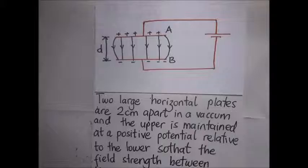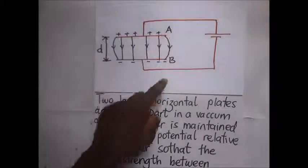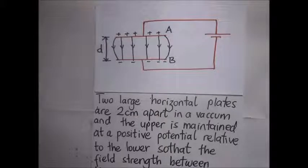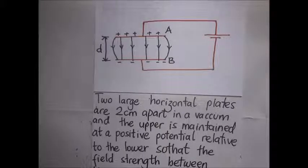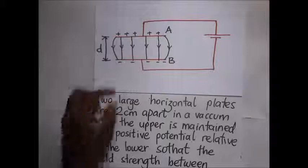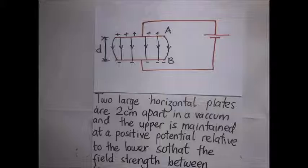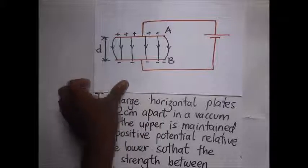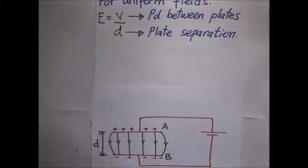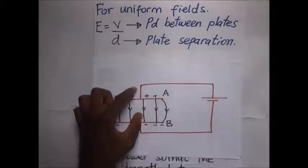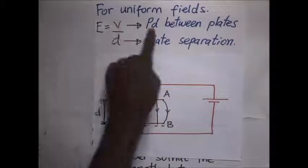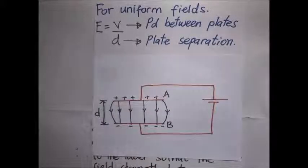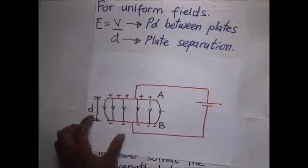We have two large horizontal plates where the upper plate is positively charged and the lower plate is negatively charged. From the relationship between electric field intensity and electric potential, we discovered that the electric field intensity between two plates is equal to the potential difference divided by the distance between them. For this uniform field, the intensity is the potential difference between the two plates divided by the plate separation, denoted by D.